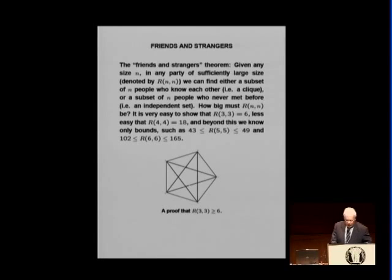Given any size n. In any party of sufficiently large size. And then it's r and n. There are two n's because there are variants which require different numbers. We can find either subset of n people who know each other. I call it a clique or mafia if you want. Or a subset of n people who never met before. These strangers. So, friends and strangers.